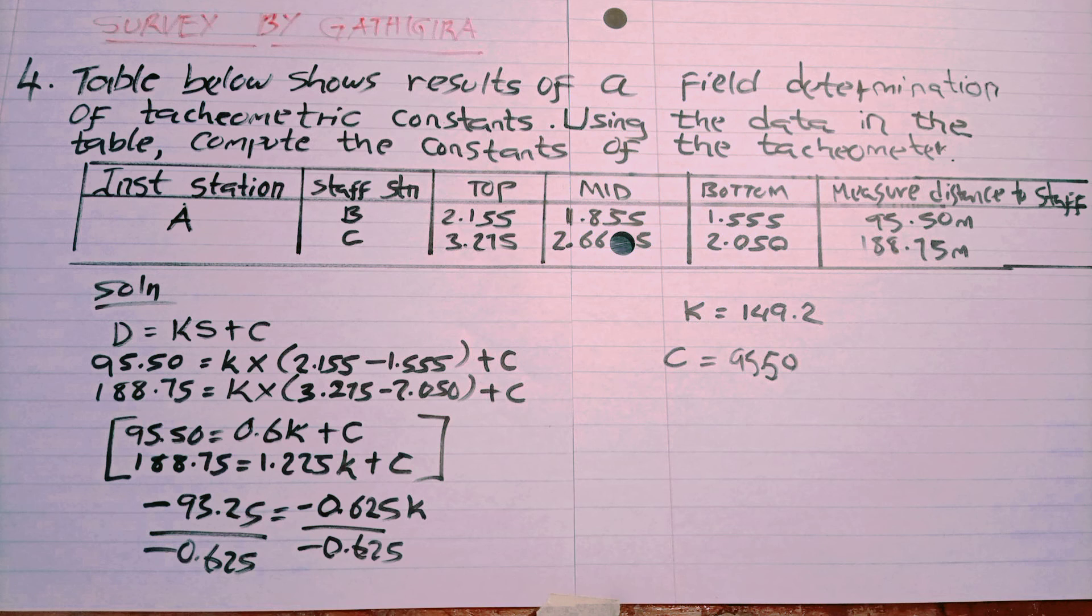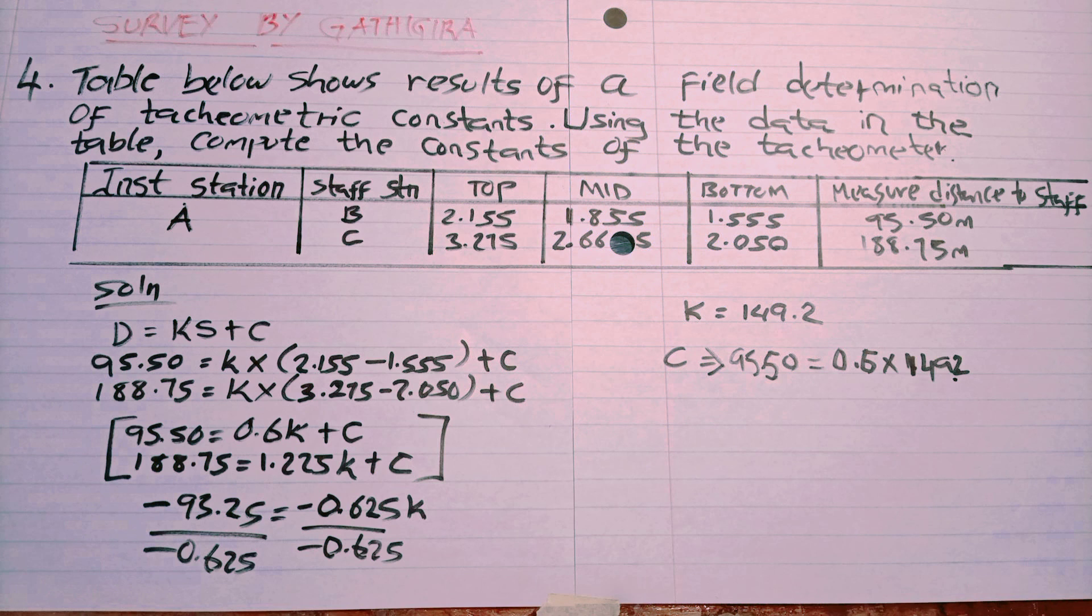For C, we compare it to one of the equations by multiplying what we have for K to the value that we had gotten, then we add C.